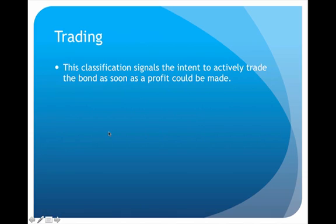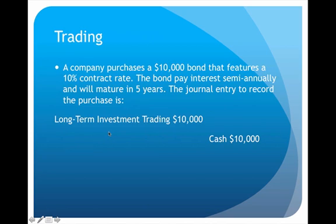Now the second category of the three is trading. This means that our intent is not to hold on to this bond, but rather to try to get rid of it as soon as possible. We want to aggressively and actively trade this bond to turn a profit. So we will record this in a slightly different way. We have the exact same example — the exact same bond — but this time the company does not intend to hold it to maturity; instead they intend to trade it. So the only difference is: when we debit long-term investment, instead of HTM we just change that to trading, and we still credit cash.